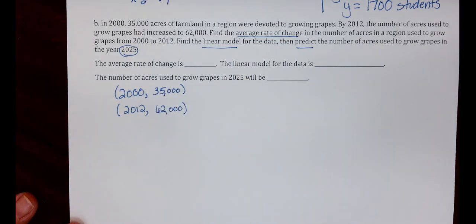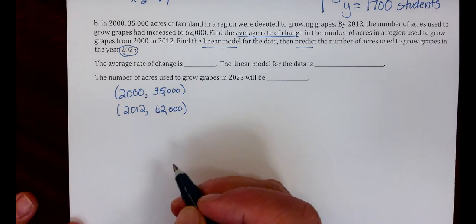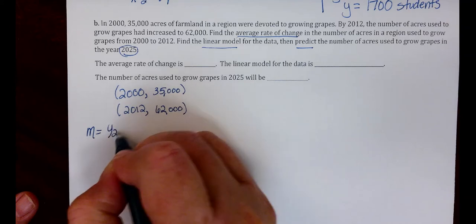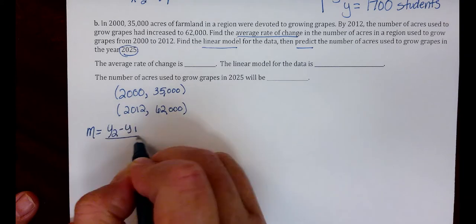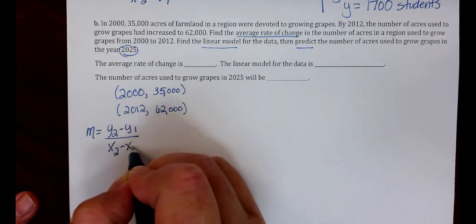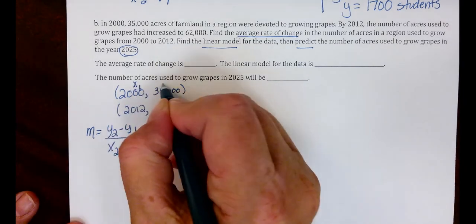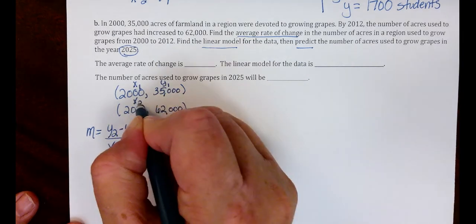Now that we have two ordered pairs, we can use the slope formula to find the slope. The slope formula is Y2 minus Y1 over X2 minus X1. Label these X1, Y1, X2, Y2.